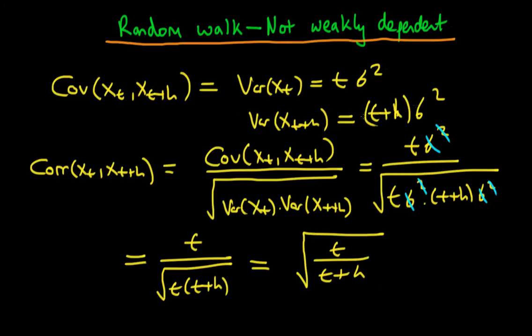Remember that for a process to be weakly dependent, we require that the correlation between xt and xt plus h has to tend to 0 as h tends to infinity.